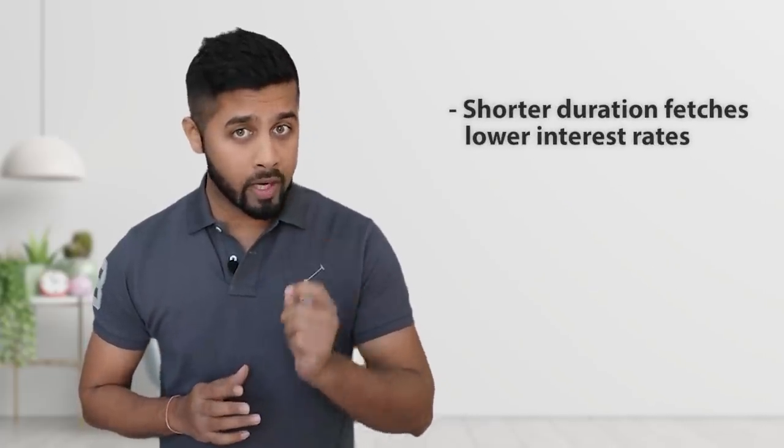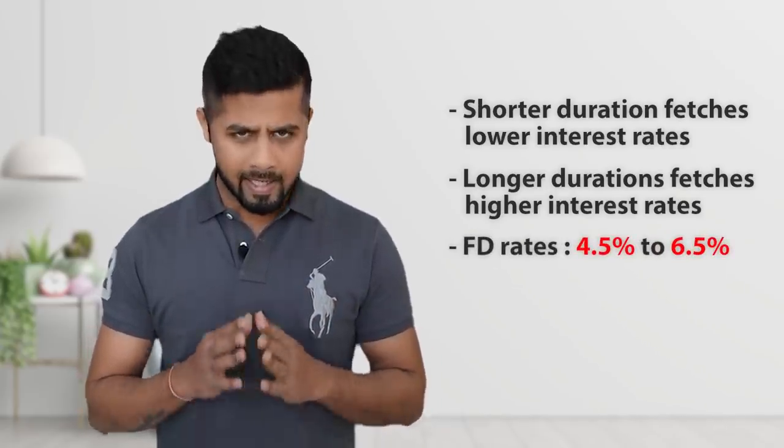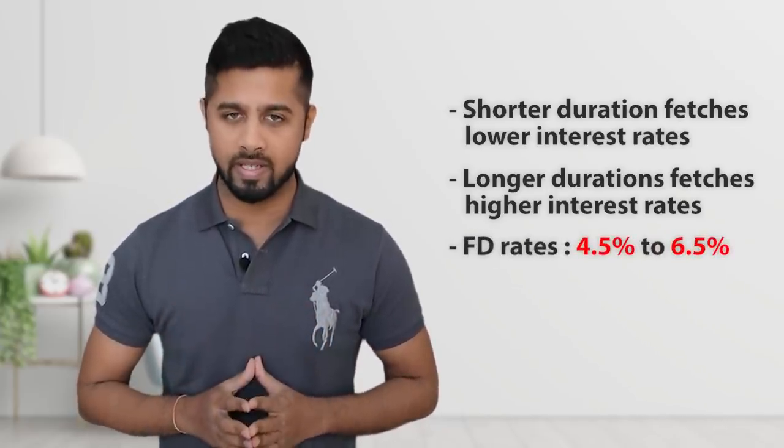We'll categorize investments in three parts: fixed income, mutual funds, and direct equity. In the fixed income category, if you don't want any volatility, you can consider investing in a fixed return instrument. The most popular is the FD. FD rates vary from bank to bank and by duration and investment amount — shorter duration fetches lower interest rates and longer duration fetches higher rates. Currently on average, FD rates are in the range of 4.5% to 6.5%. Top banks like SBI provide FD interest of 5% to 5.4% based on duration, while HDFC Bank and ICICI Bank offer rates in the range of 4.9% to 5.5%.